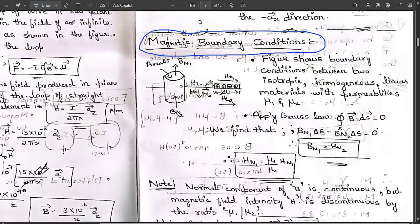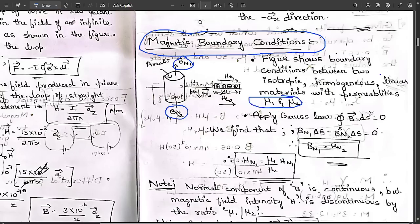This figure shows the boundary between two isotropic, homogeneous, linear materials with permeabilities μ₁ and μ₂. Applying Gauss's law for magnetic fields — the surface integral of B · dS = 0 — we get: Bn1 ΔS - Bn2 ΔS = 0.